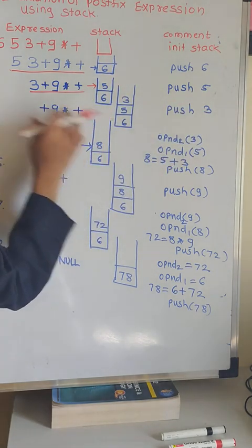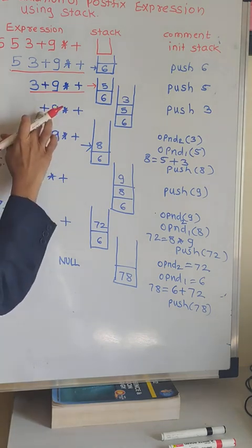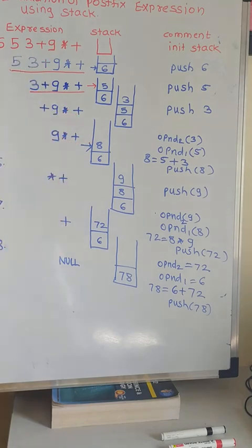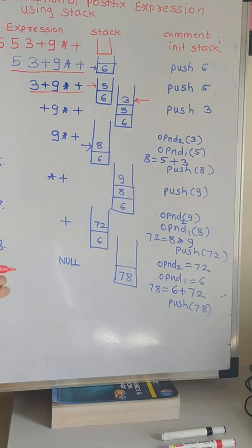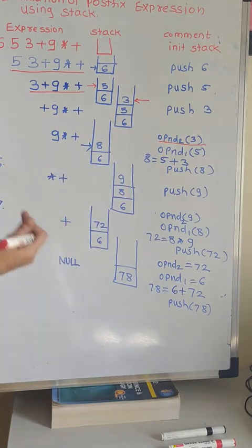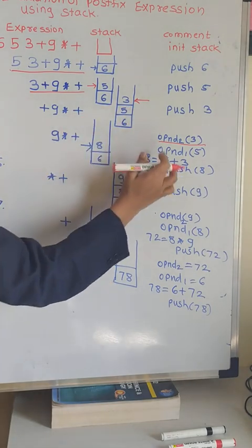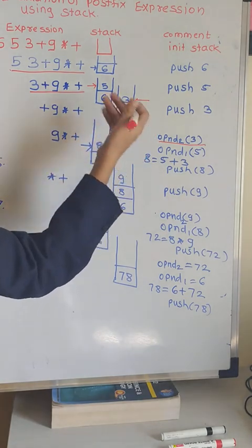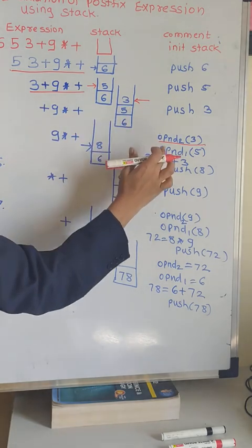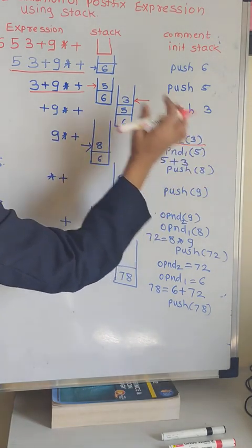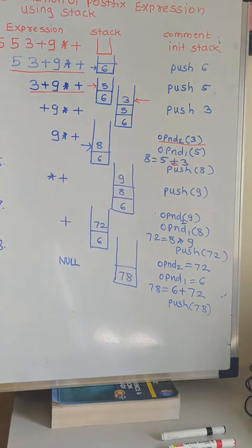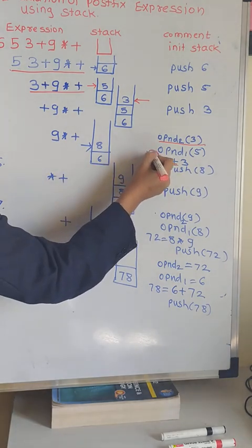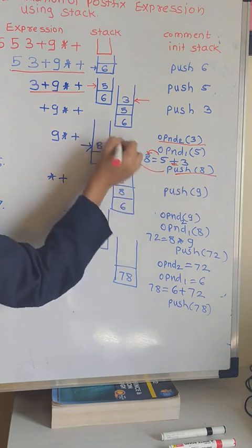After that, the next token is plus — an operator. When any operator comes, pop these two elements. Pop the first element and write it as operand 2 — note that this is your operand 2. Pop 3 as operand 2. Then pop 5 and store it as operand 1. So operand 1 is 5, operand 2 is 3. Add 5 and 3 because the operator is plus. Apply plus on operand 1 and 2, and you will get the result 8. Push this 8 on the stack.